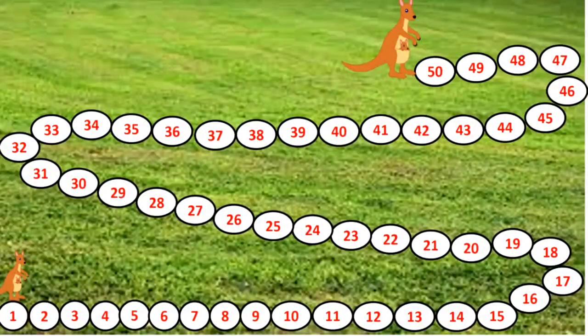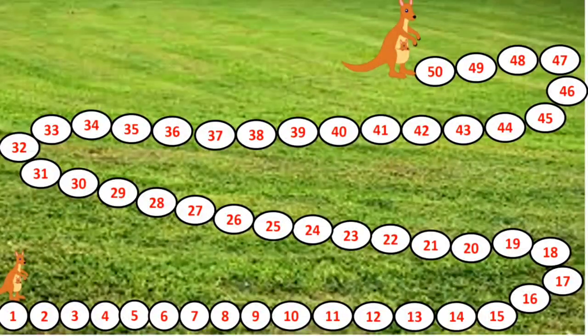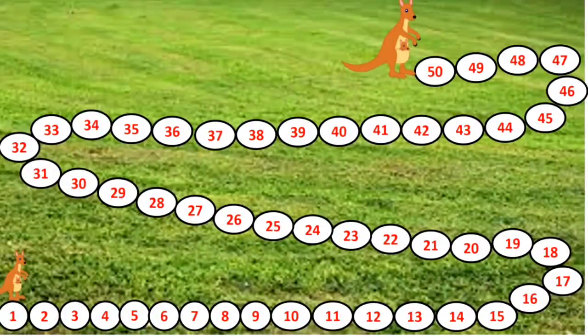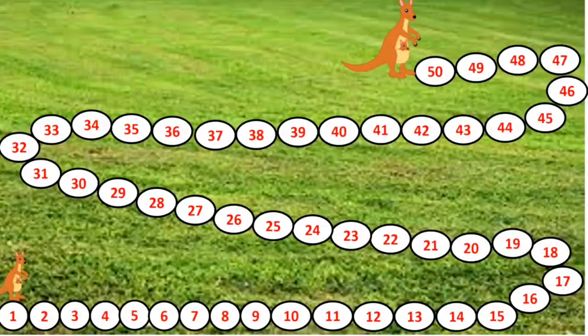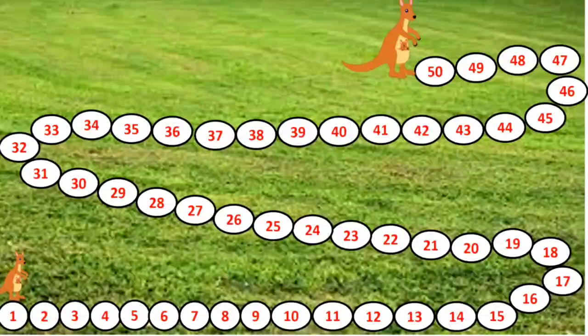We are going to say the number where the kangaroo is landing after a hop. And in this way we are going to learn the skip counting of 5. Let's begin.